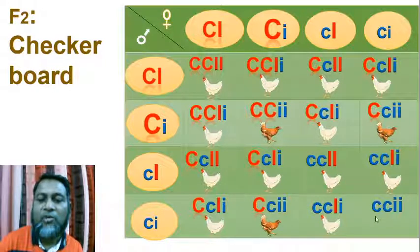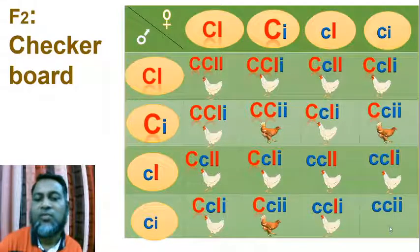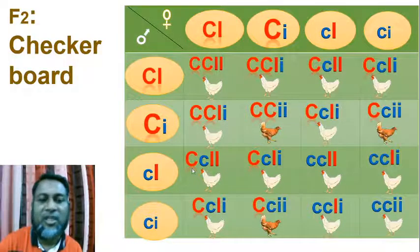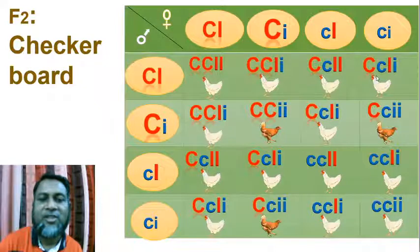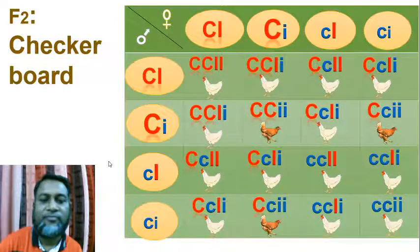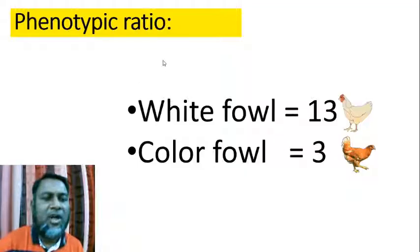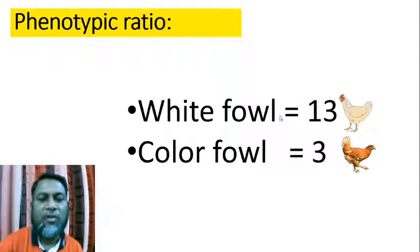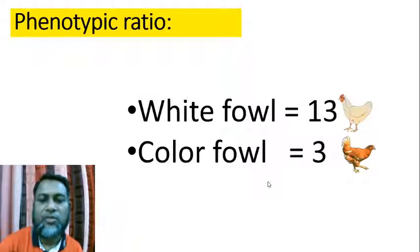Here, both color and inhibitor gene are recessive, so the fowl is white. From this checkerboard, we get only 3 colored fowls, but the other 13 are white. So the phenotypic ratio of epistasis gives us white fowl 13 and colored fowl 3. We get the ratio 13:3.